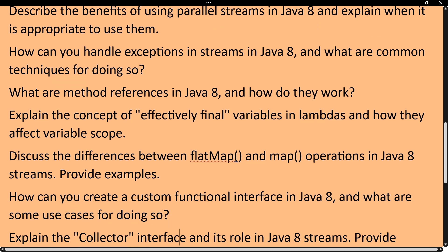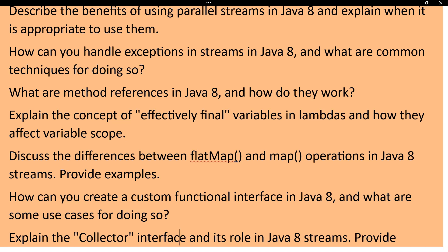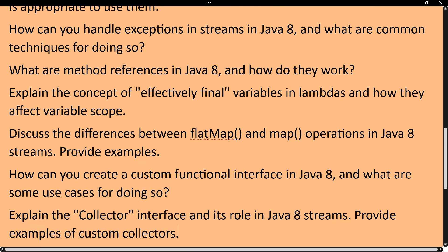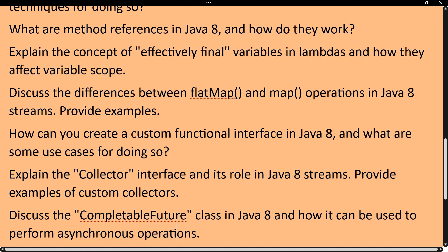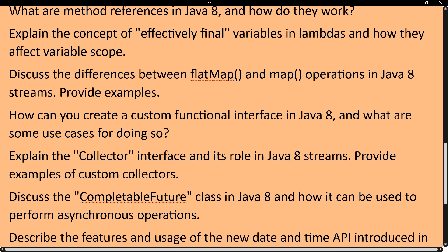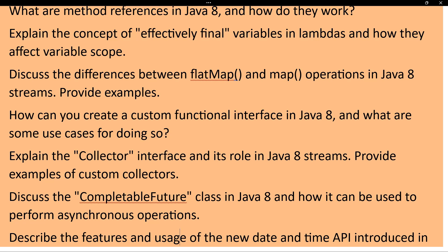The next question is: what is method reference in Java 8 and how do you work with it? Can you give real examples of how you used method references in your project? The next question is: explain the concept of effectively final variables in lambda expressions and how they affect variable scope. The next question is: discuss the difference between map and flatMap operations in Java 8 streams — provide a detailed example. This is a very important question that may be asked for both freshers and experienced candidates.